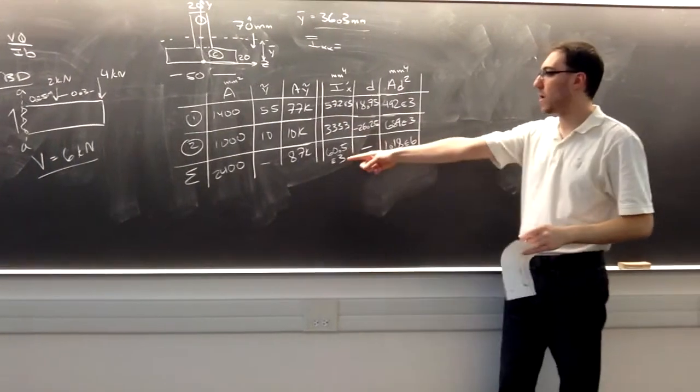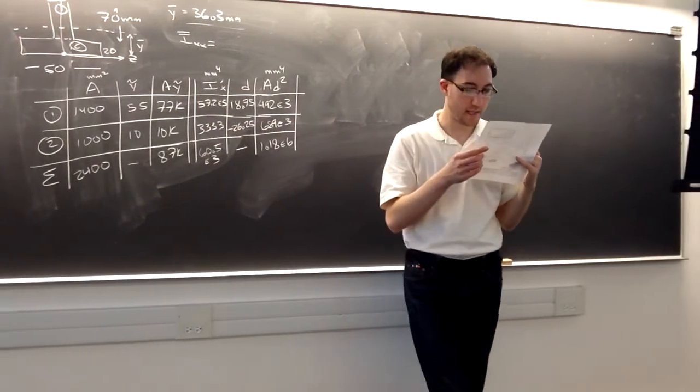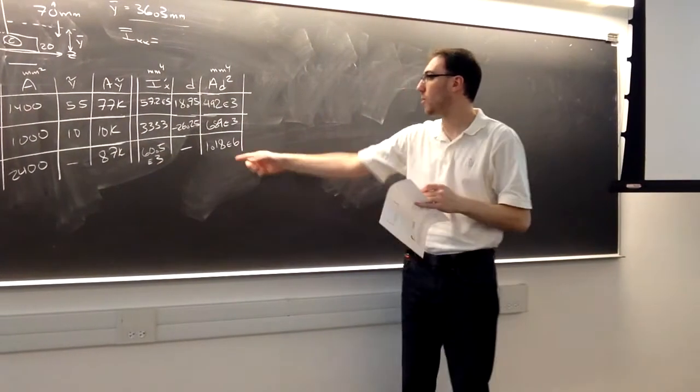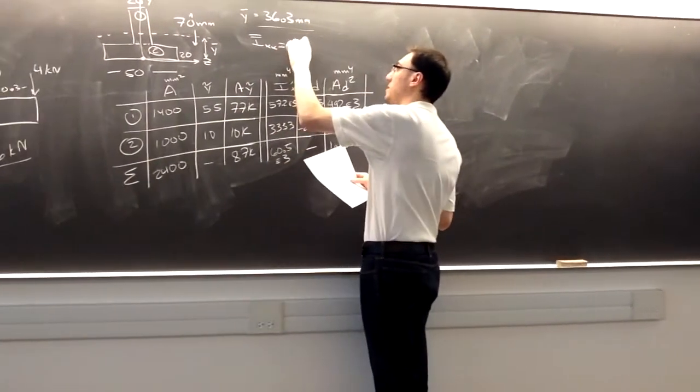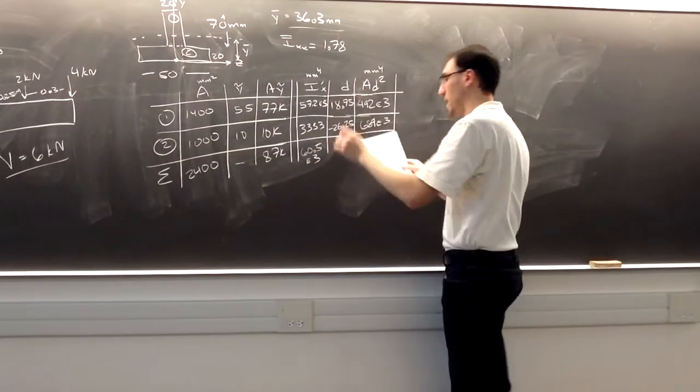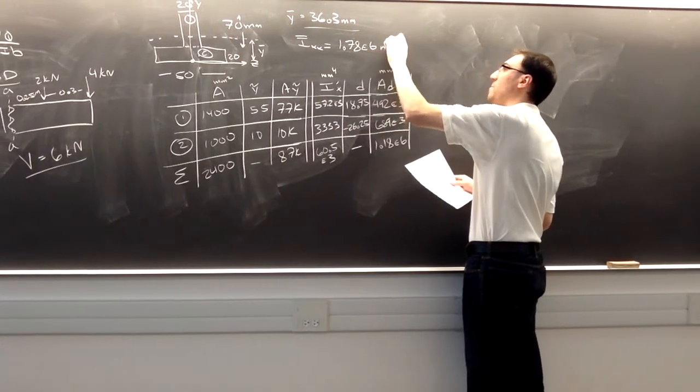We add our IX prime, which was 60.5,000 to the 1.18 million. And we're going to get 1.78 times 10 to the sixth millimeters to the fourth power.